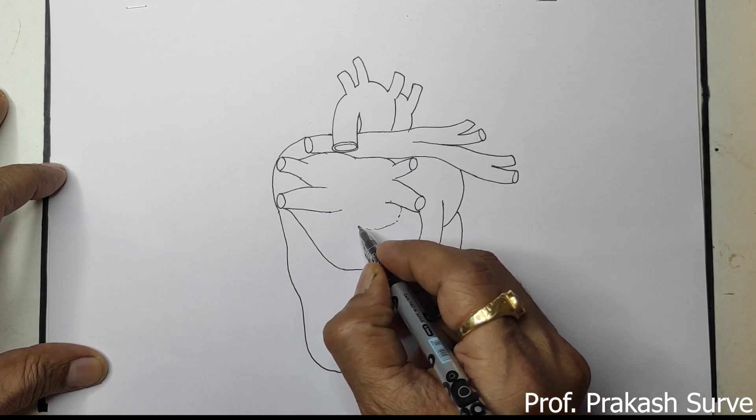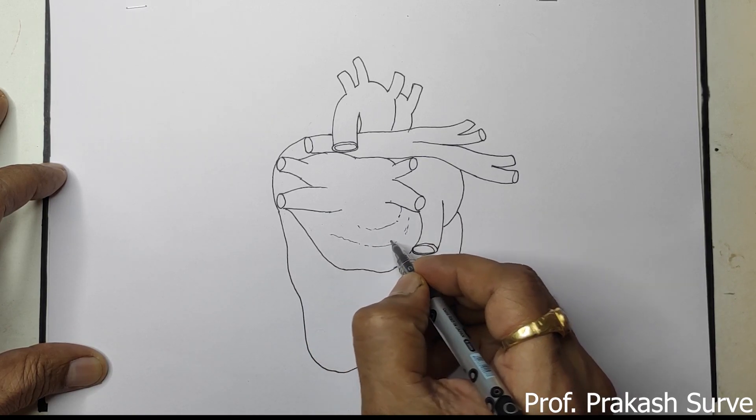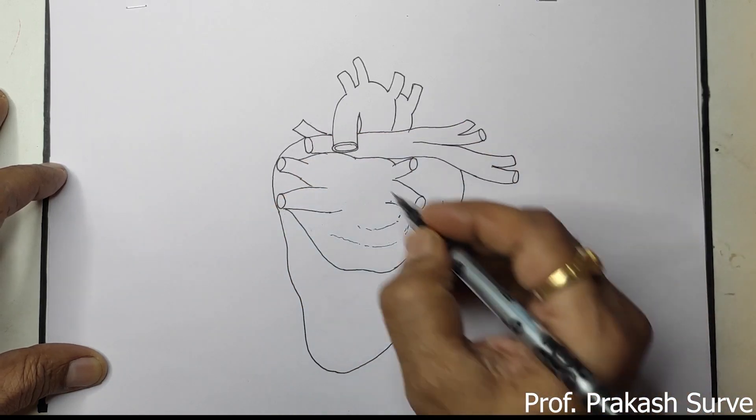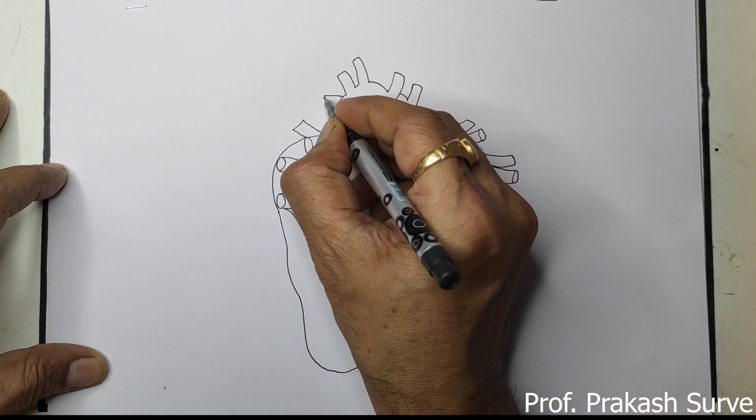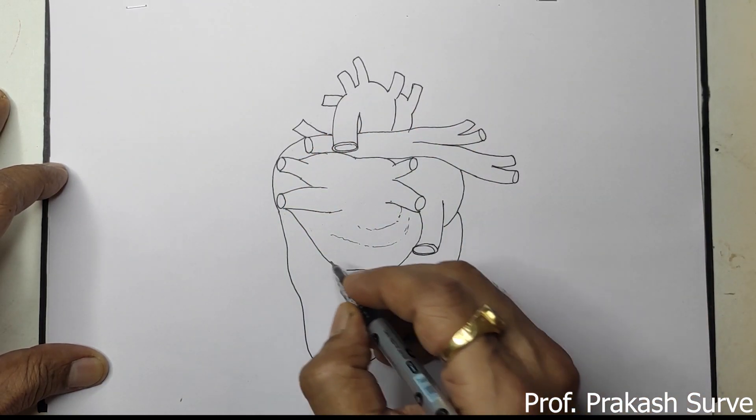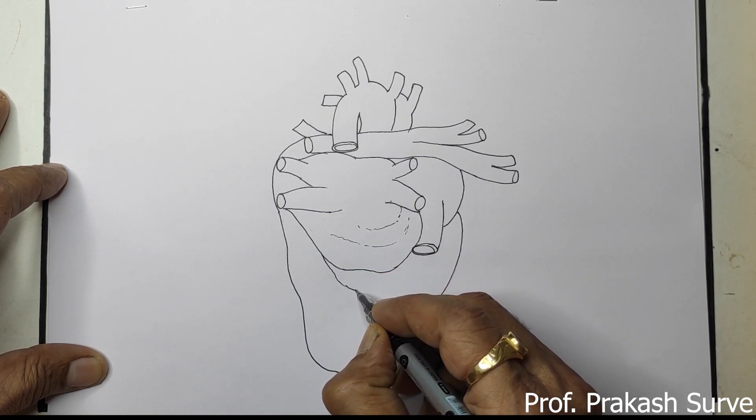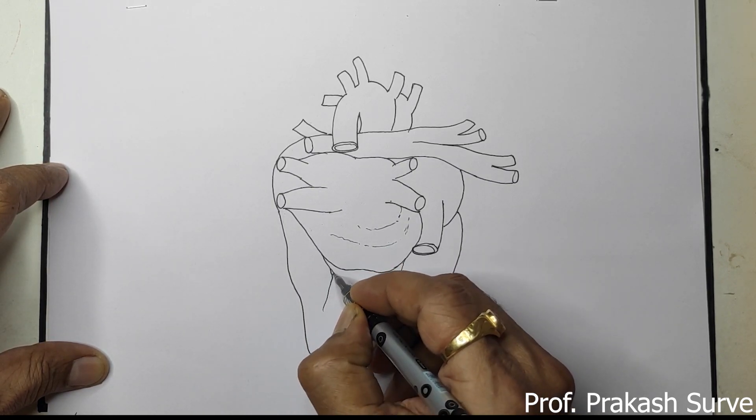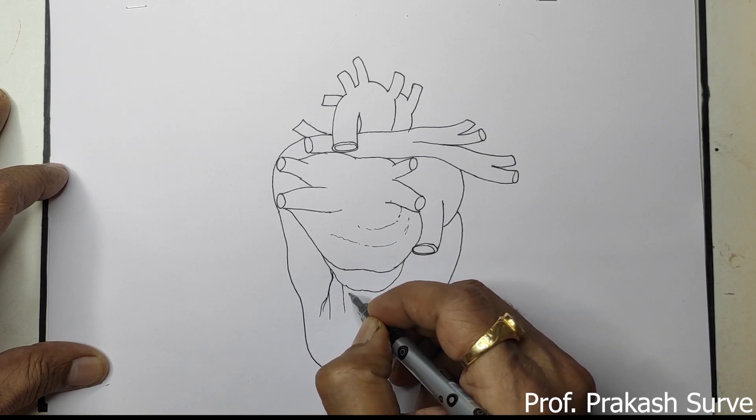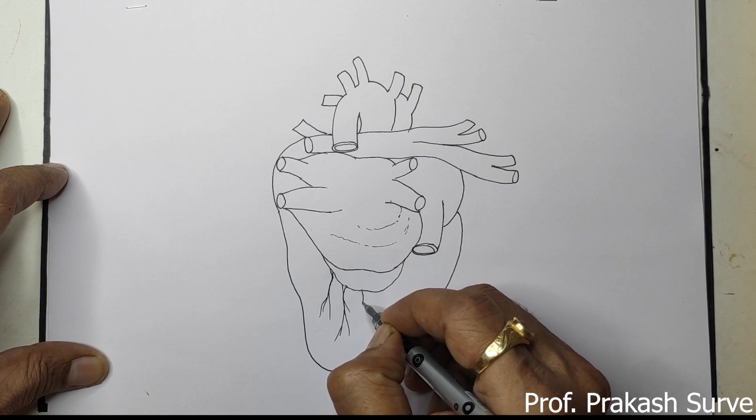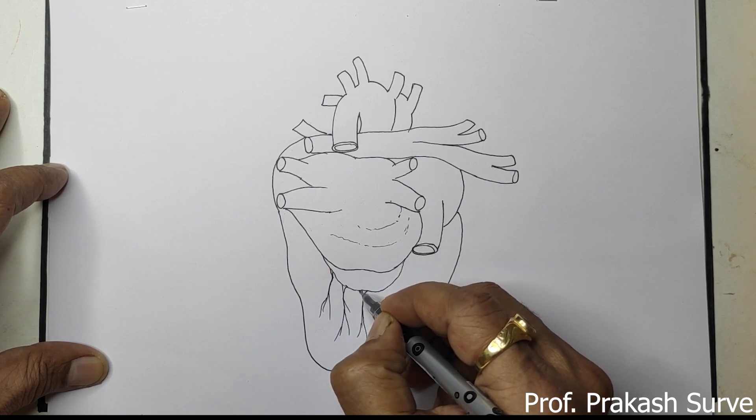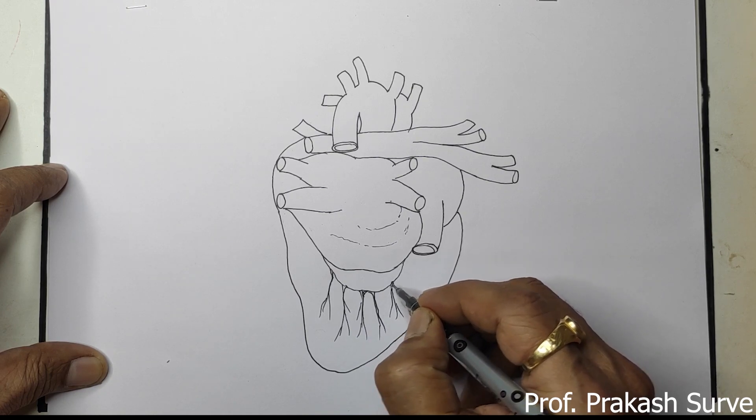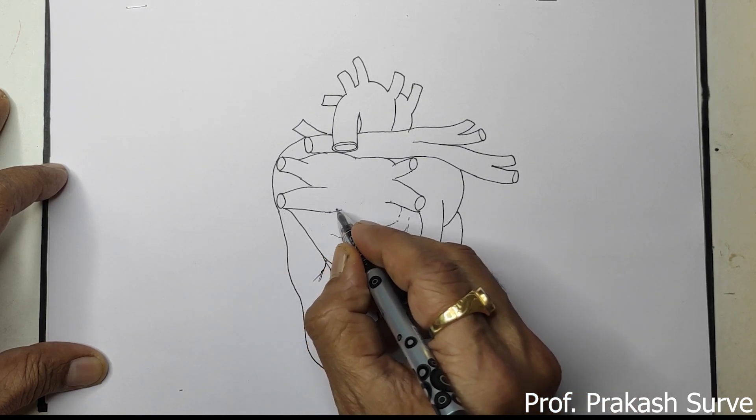Like that, here is another opening. Now here we'll make the structure somewhat like that. This will be the coronary sinus. Like that we'll do the shading afterwards.